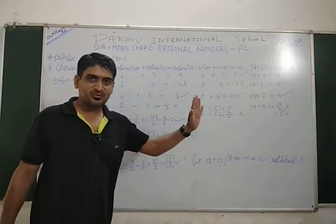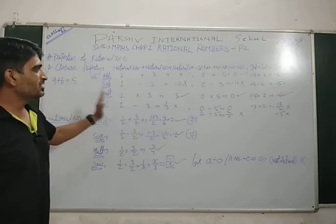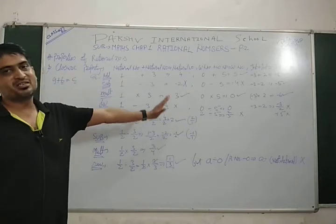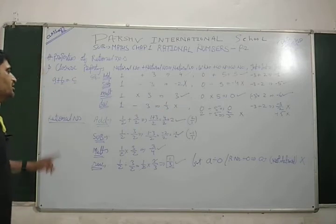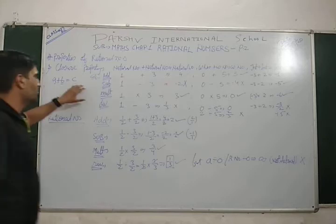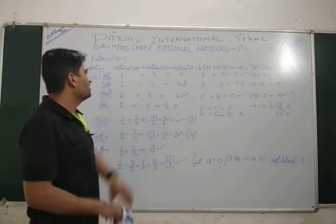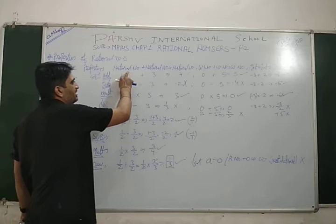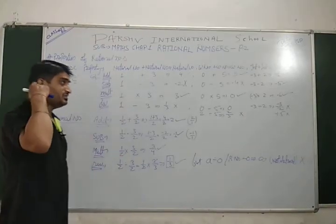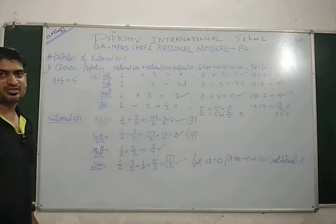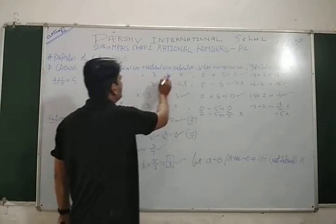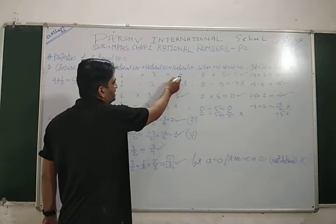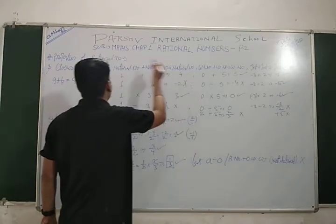So first of all, natural number is 1 to 9. Natural number is 1 to 9. I have to say that the answer is 4. The addition is the natural number.